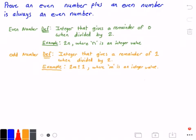In green below we have the definition of what it means for a number to be even. It states that an even number is an integer that gives a remainder of 0 when divided by 2. An example of this is 2n where n is some arbitrary integer value.